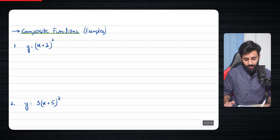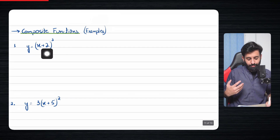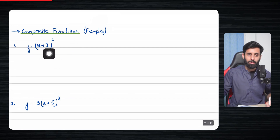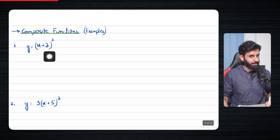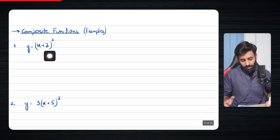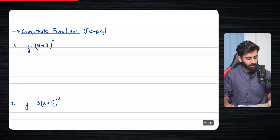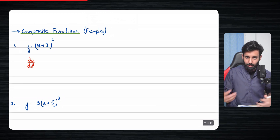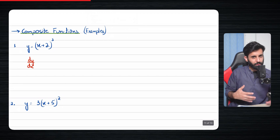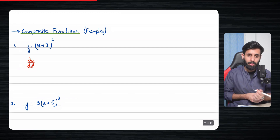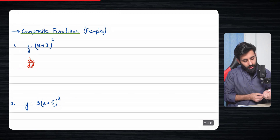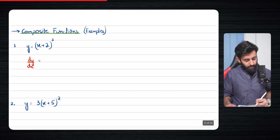So what exactly is a composite function? A composite function is where you have an expression which is raised to a certain power — the entire expression is raised to a certain power. The question is: how do you differentiate functions like these? As always, we're going to learn how to differentiate a few functions and then, looking at the pattern, try to come up with a general rule.